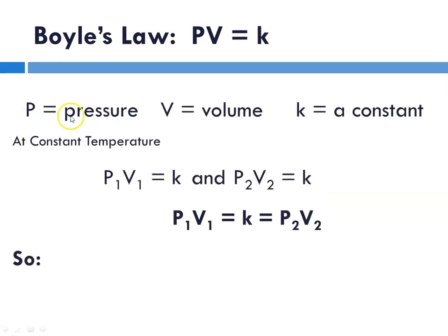Where P is pressure, V is volume, and k is a constant. At constant temperature, pressure and volume can be expressed as P₁V₁ equals a constant.